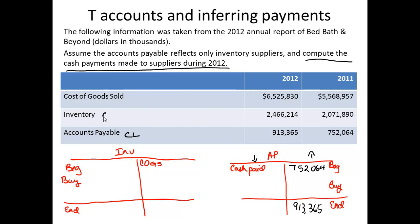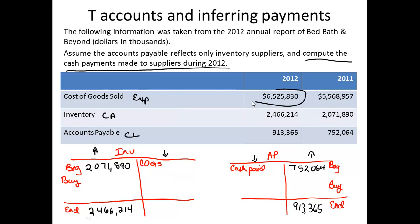If we assume that the current asset inventory is all purchased on credit, the beginning balance is $2,071,890 and the ending balance is $2,466,214. The reason inventory increased during the year was because we bought it. Inventory is decreased when we sell it, and so the expense account — cost of goods sold — for the year is the cost of the inventory sold: $6,525,830.